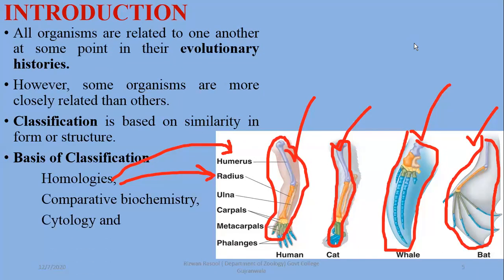Then comes cytology — the cell structure, whether prokaryotic, eukaryotic, or other structures, can serve as a basis of classification. Additionally, common genes or common DNA sequences and the inheritance of specific genes can also be used as a basis for classification.